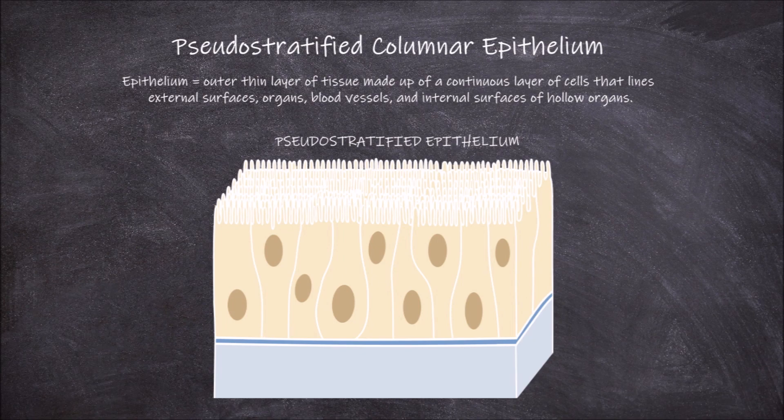There are several types of epithelium found lining the surfaces of the body. These can be distinguished based on a mixture of the number of layers of cells the epithelium is made up of and the shape of the epithelial cells.